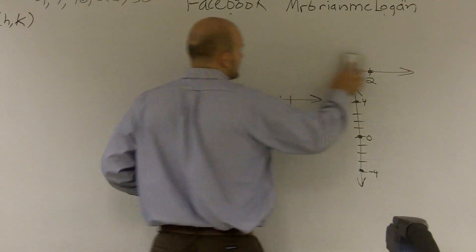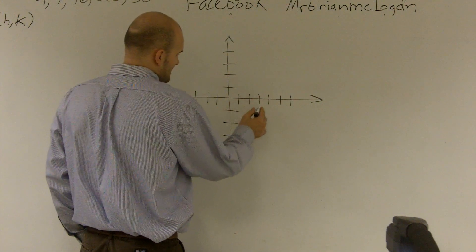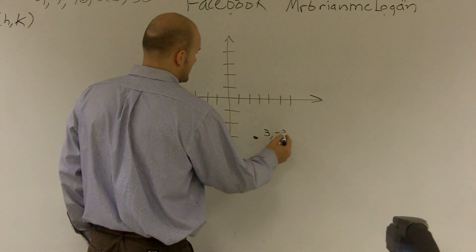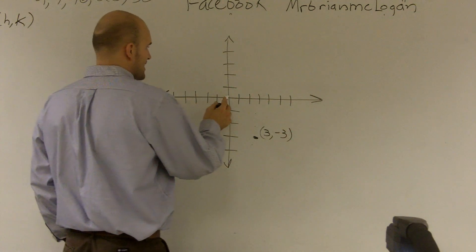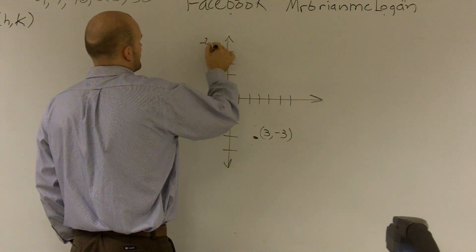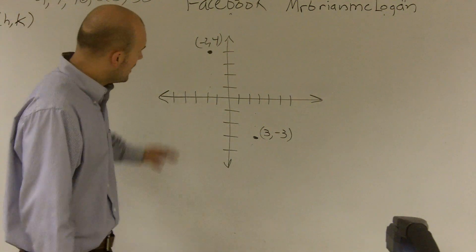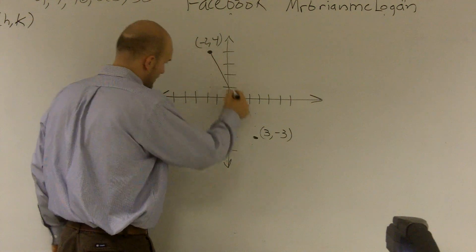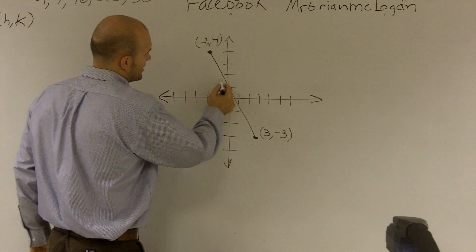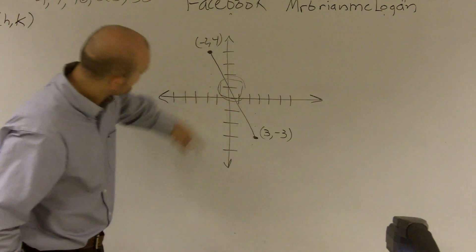Let's make a problem up. Let's say I pick the point 3, negative 3, and I want to find the midpoint between that and negative 2, 4. We might be getting a decimal, we might not — I'm just totally making this problem up. I do know, though, if I want to find the midpoint between these two points, the middle is going to be somewhere right around in here.